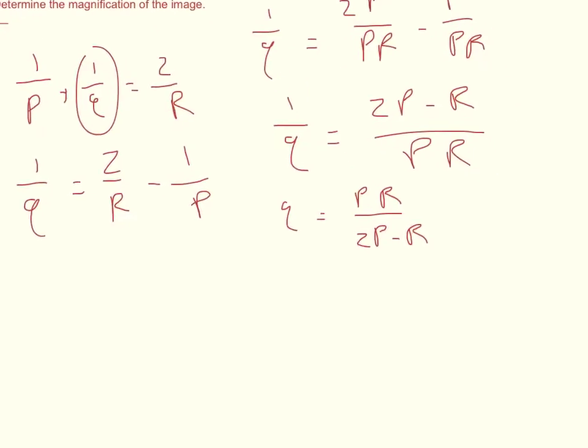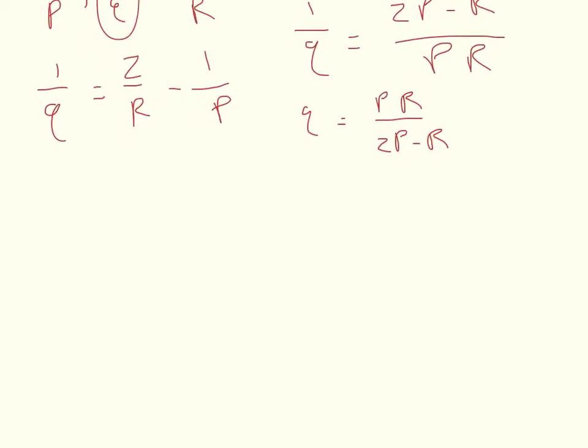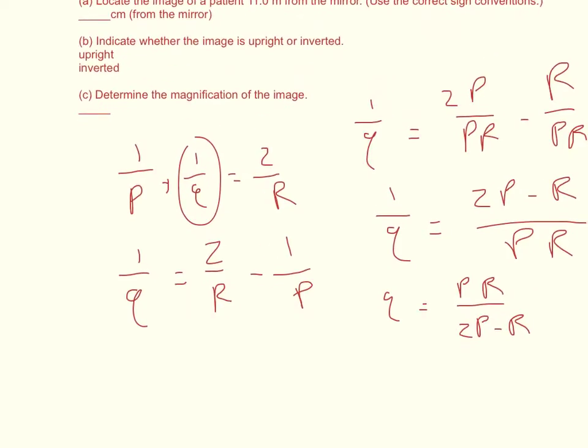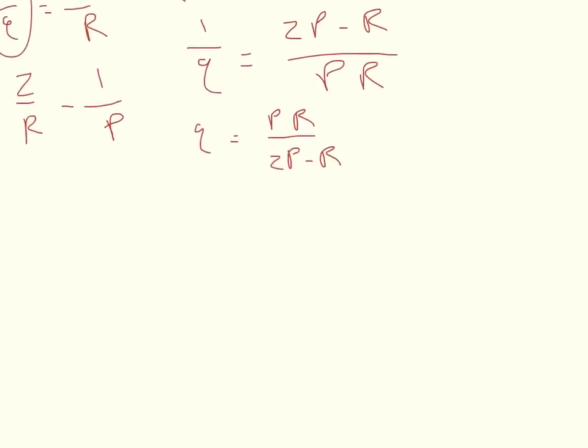Remember, R is negative. In the second part, it asks to determine if the image is upright or inverted. The only way we can do that is if we find the magnification. So part C wants the magnification. We'll do that first.